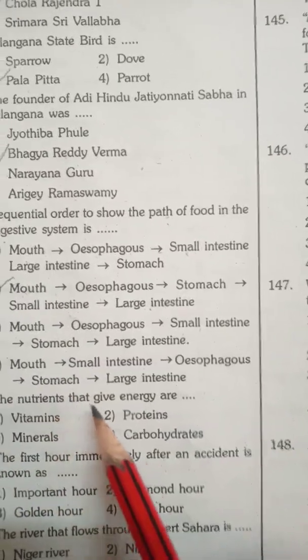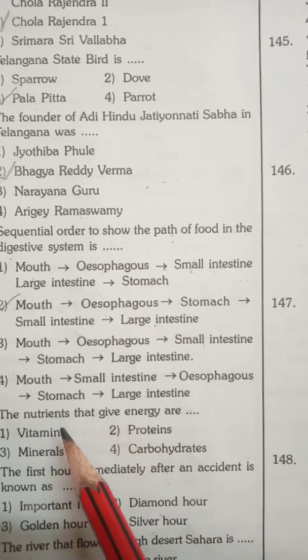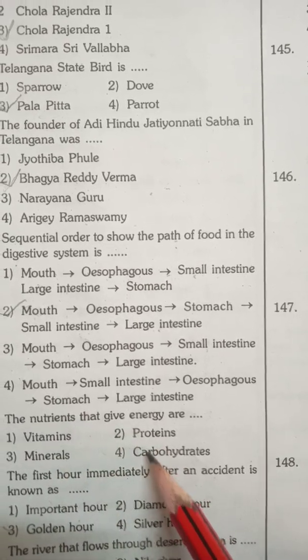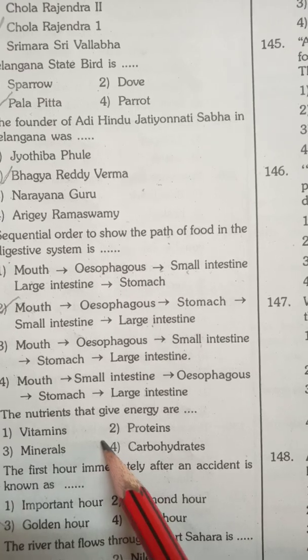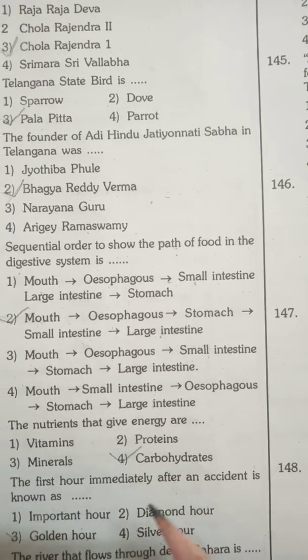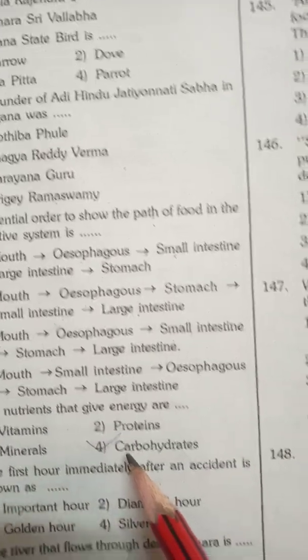The nutrients that give energy: vitamins, minerals, proteins, and carbohydrates. Carbohydrates are the main nutrient family for making energy.